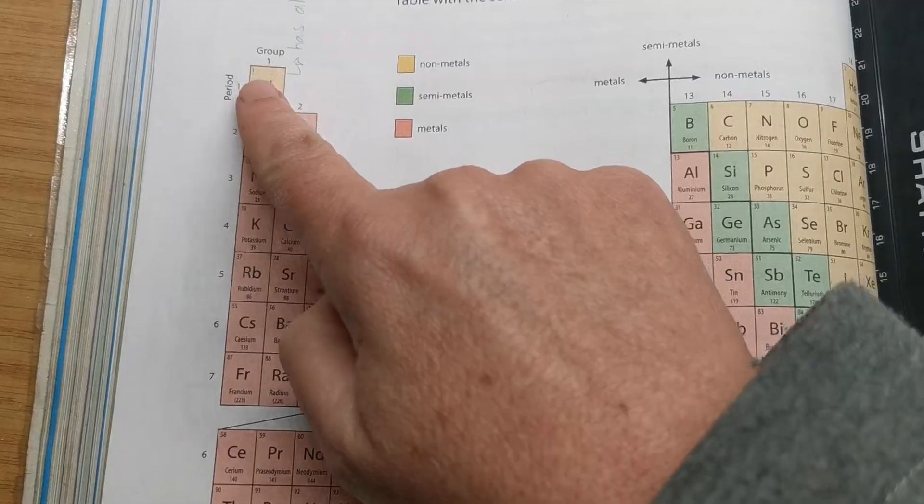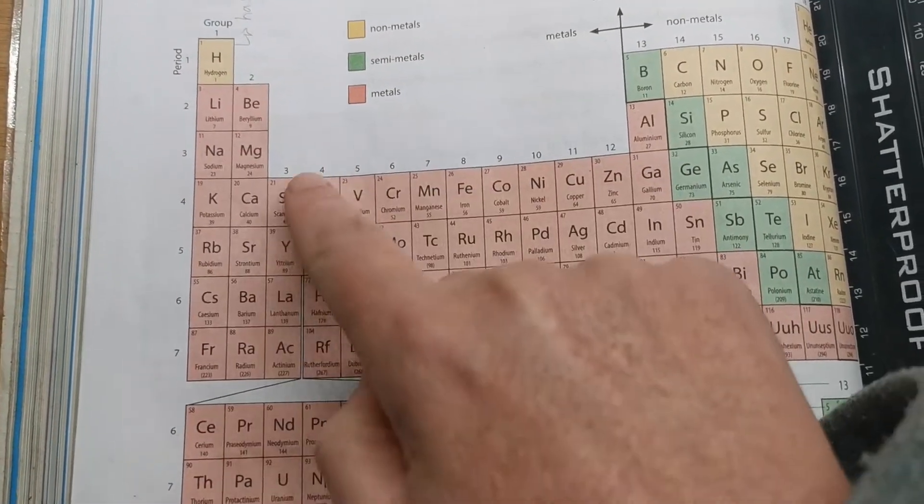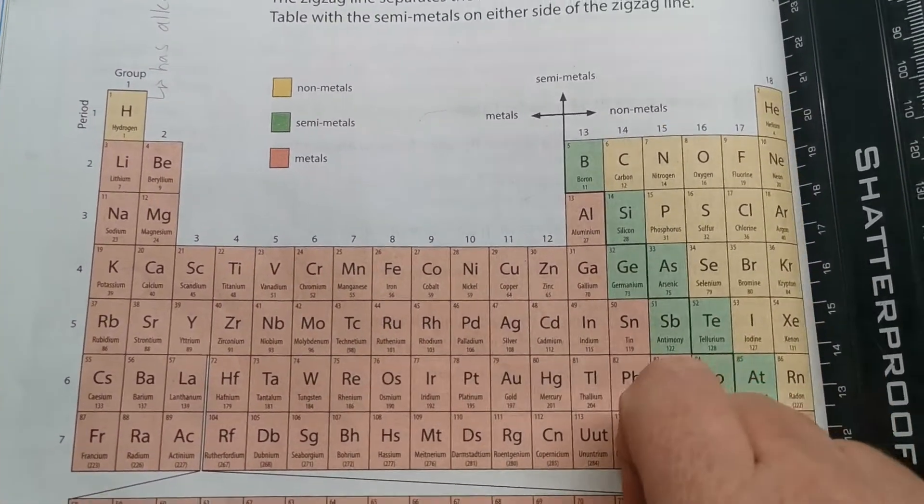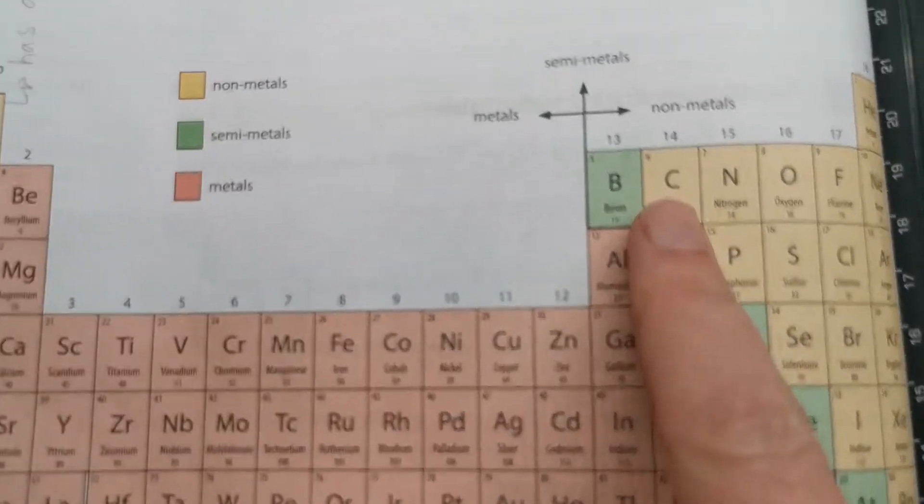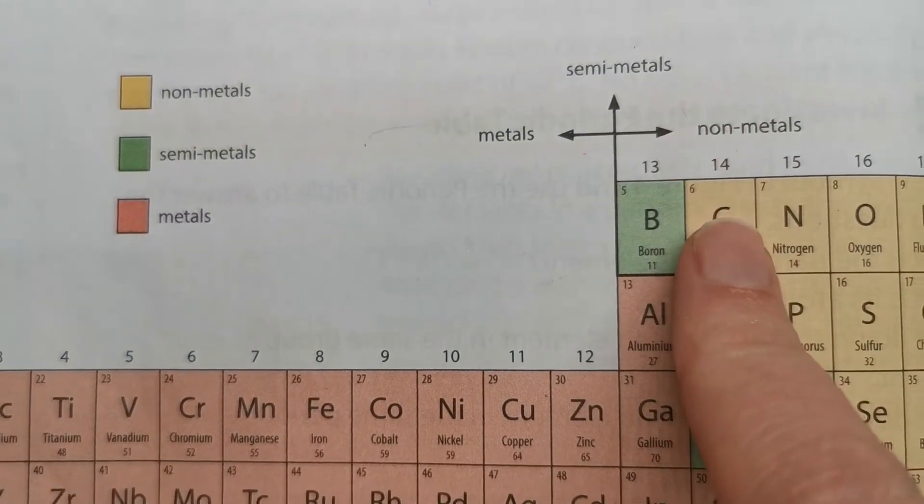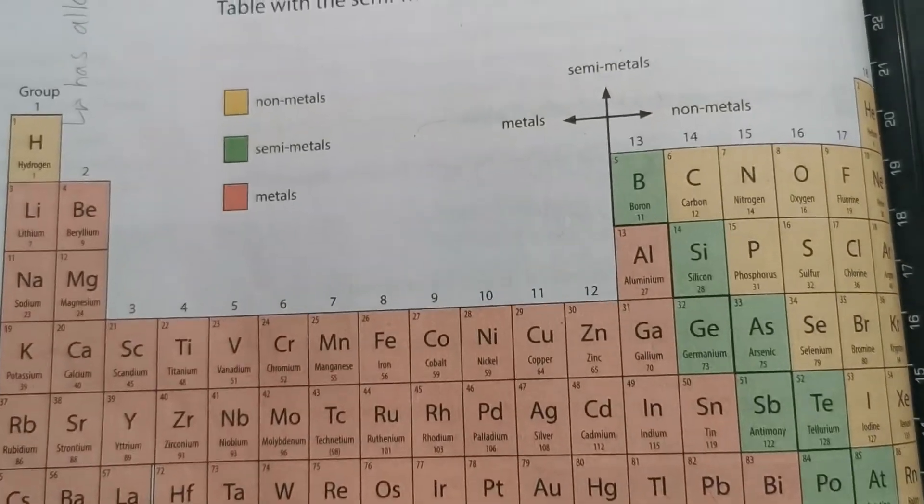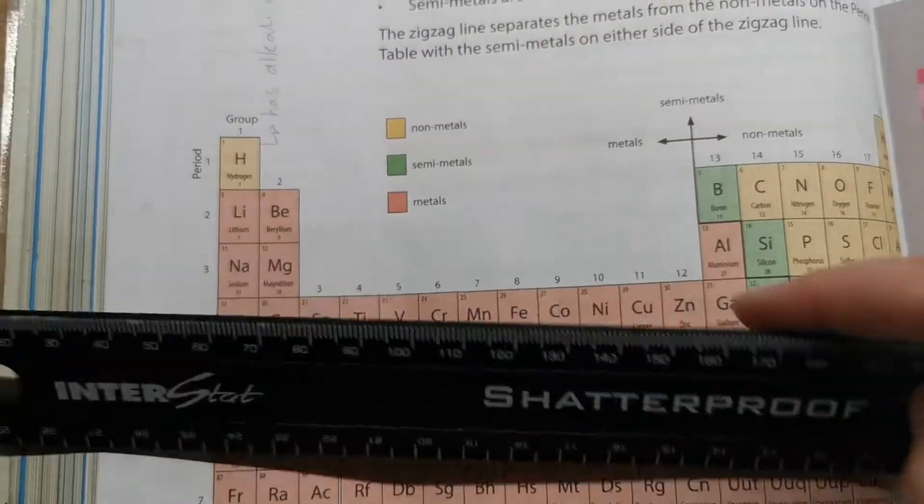Then I've also got rows going up and down, with numbers on top of them. So if I have a look at our carbon again. Carbon is in group number 14. So let's just get this straight.